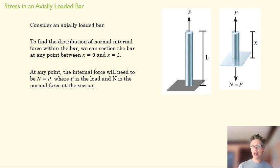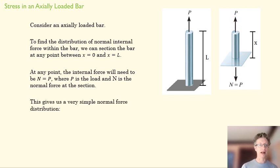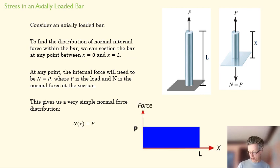Okay, because that N has to provide the counterforce to P to keep it in equilibrium. And this gives us a nice little distribution equation in which N is equal to P, and we could plot that. So over the whole length of our rod, the internal normal force would be equal to P.